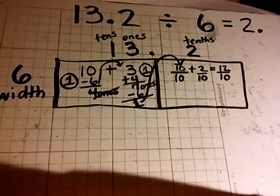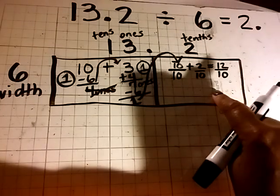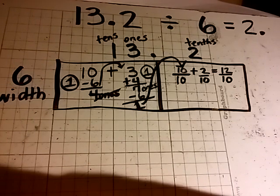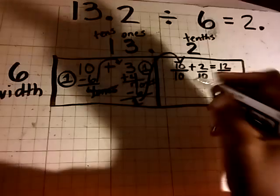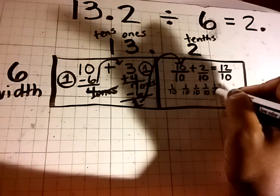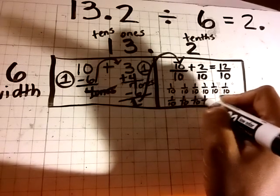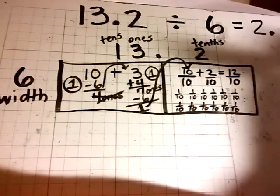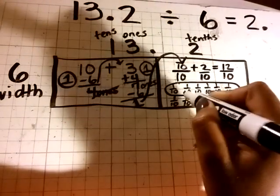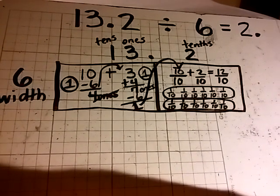And you ask yourself, how many groups of 6 tenths, because we are in the tenths place value, do we have in 12 tenths? So if you have 12 tenths, how many groups of 6 tenths would you have? And you will have 2 groups of 6 tenths.